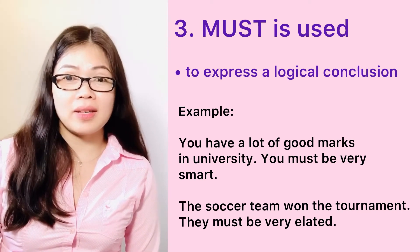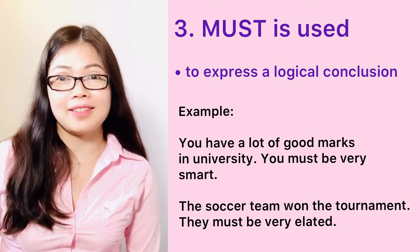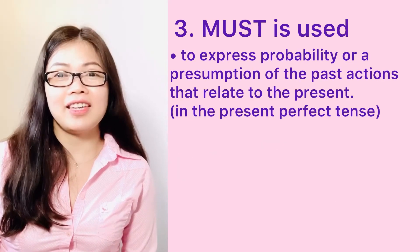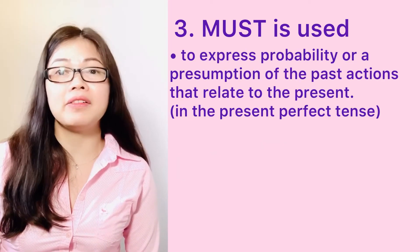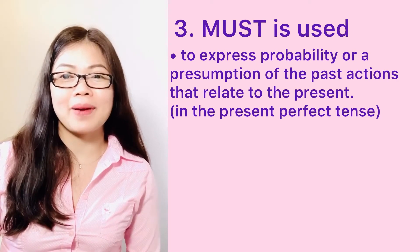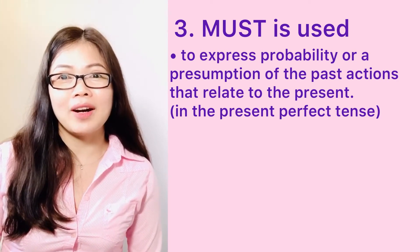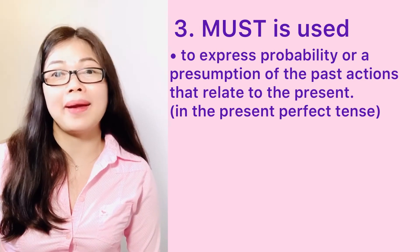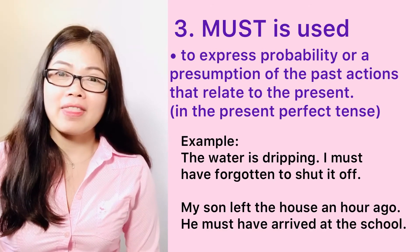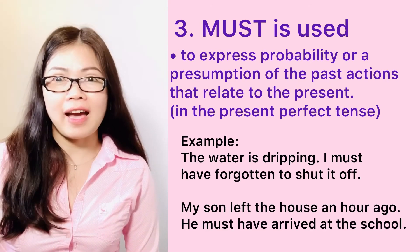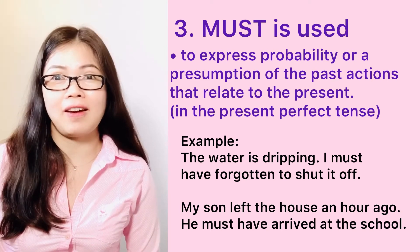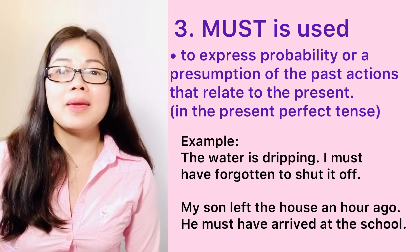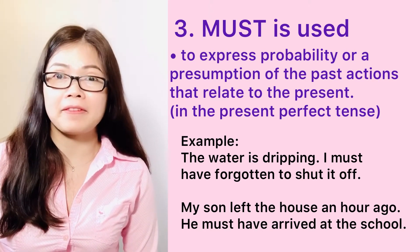The soccer team won the tournament — they must be very elated. Must is also used in the present perfect tense to express a probability or presumption of past actions that relate to the present. For example, the water is dripping — I must have forgotten to shut it off. My son left the house an hour ago — he must have arrived at the school.